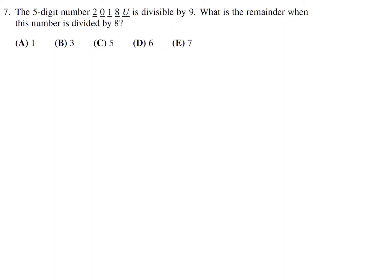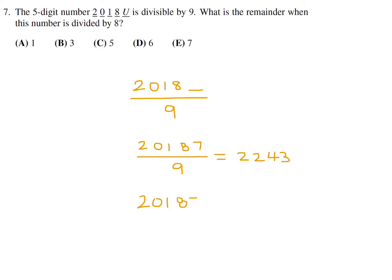The five-digit number 2018U is divisible by 9. What is the remainder when this number is divided by 8? We need to find the digit U such that 2018U is divisible by 9. That gives us 20187, which divided by 9 equals 2243 exactly. Then 20187 divided by 8 gives 2523 with a remainder of 3. Number 7, the answer is B.